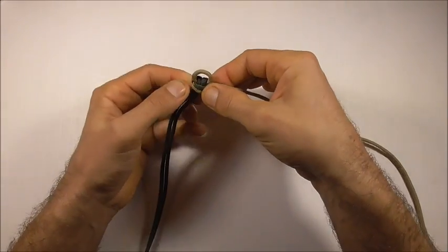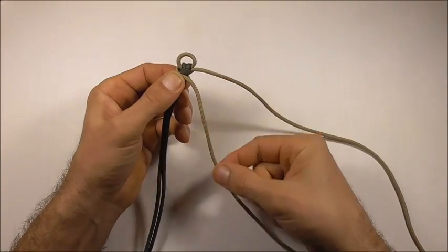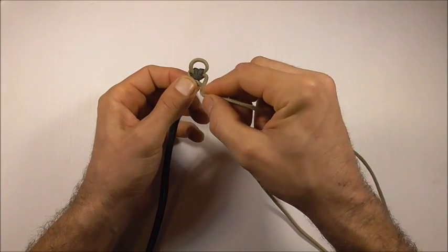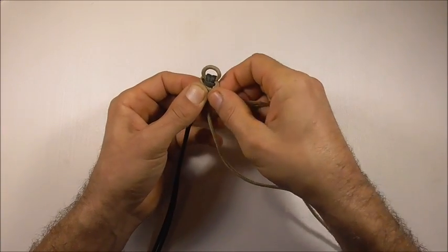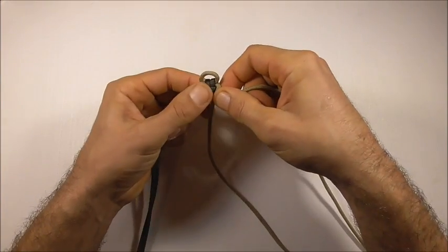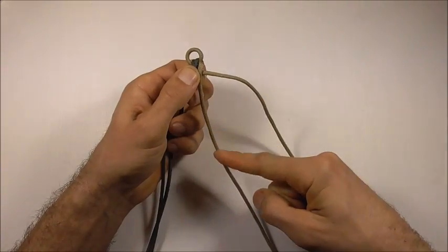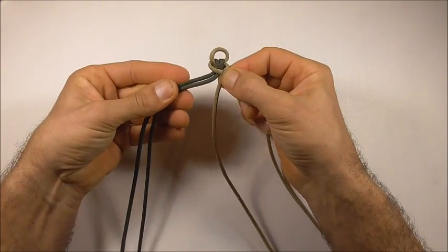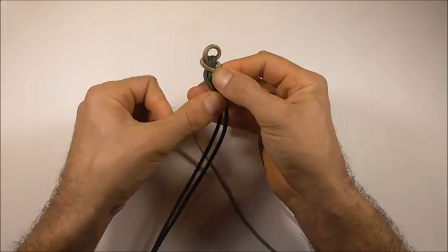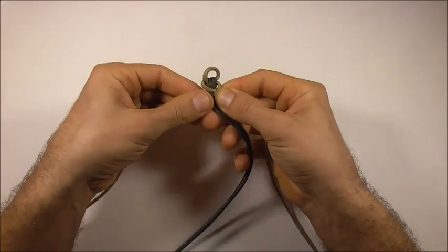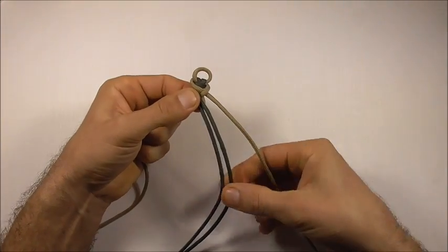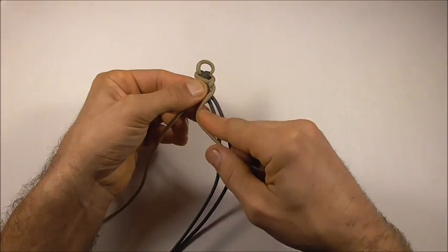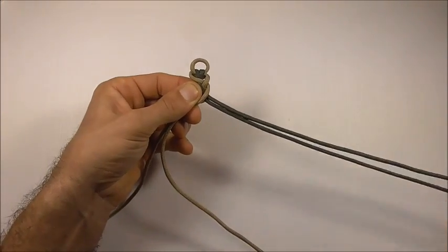So I'll start with my left strand and take it over the center, just keep this nice and tight. And then this will be the new center. I'm going to take my right hand side, take it over the center strand, and that will be the new center. Then I'll take my left strand, which is two strands in this case, take it over the center. And then I'm going to take my right strand over the center strand, which is two strands again.